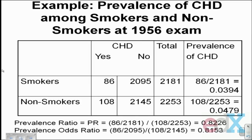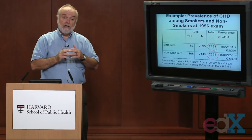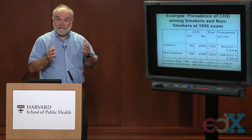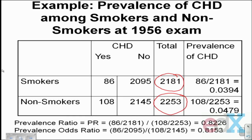In this dataset, there are a grand total of 2,181 individuals who claimed to be smokers at the 1956 exam, compared to another 2,253 individuals who were non-smokers. Each person was classified as a smoker versus a non-smoker. In addition, each person at the 1956 exam was asked: have you been diagnosed previously with coronary heart disease? Among the 2,181 smokers, 86 of those people said yes, they had been diagnosed previously with coronary heart disease.